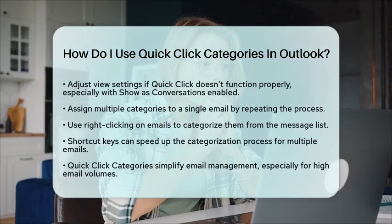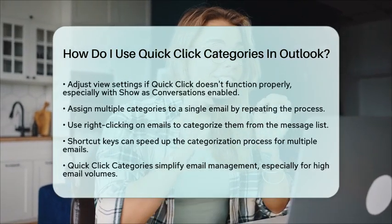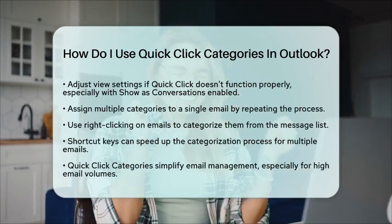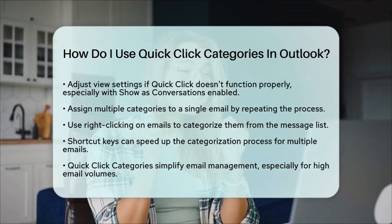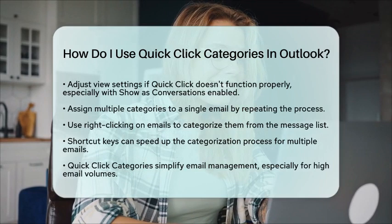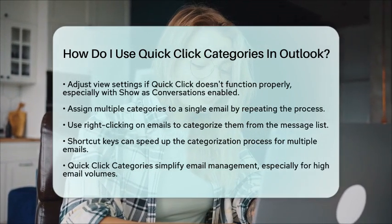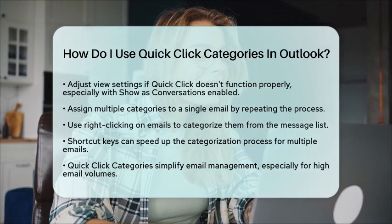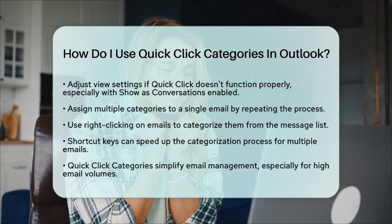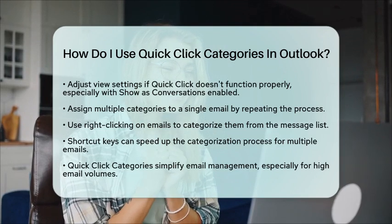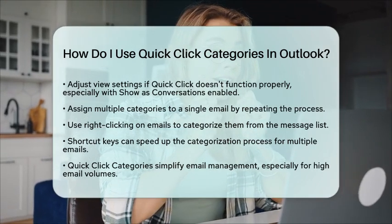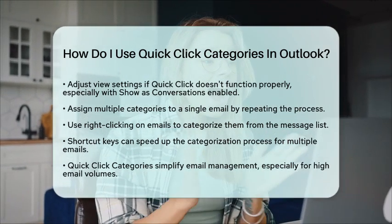You can also assign multiple categories to a single email by repeating the categorization process. If you prefer, you can apply categories from the message list by right-clicking on emails and selecting Categorize. Assigning shortcut keys to categories can also help you apply them quickly to multiple emails. Using Quick Click categories makes email management much easier by reducing the steps needed to organize your messages. This feature is particularly useful for anyone handling a high volume of emails and wanting to keep their Outlook inbox tidy and prioritized.